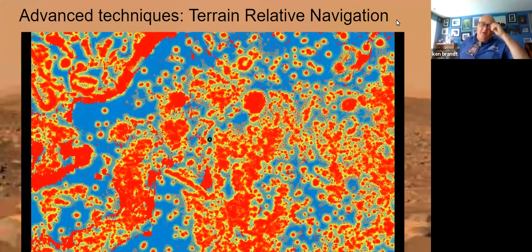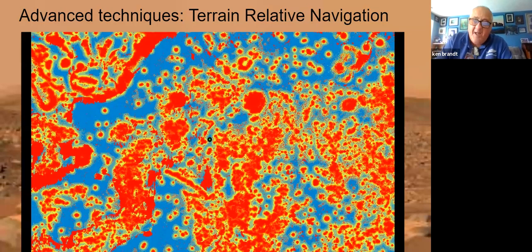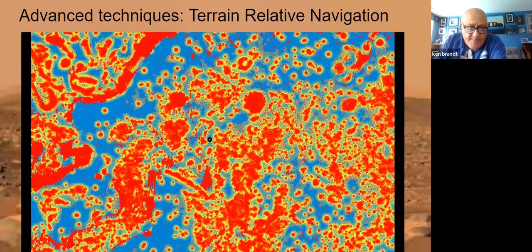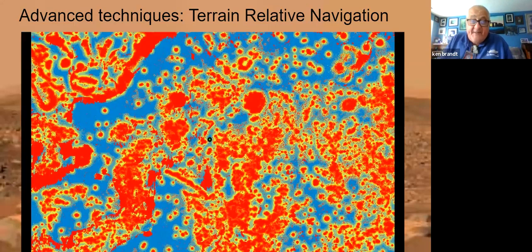The reason Perseverance got to land in such close proximity to the delta it was exploring has to do with terrain relative navigation. You're seeing a radar map of the floor of Jezero Crater. Red is bad — hills, jagged rocks, sand, hazards. Blue is good — flat rock or firm sandy surface you can still drive on. You can see Perseverance snuggled right between those two red splotches. That little green dot is where Perseverance and Ingenuity landed on Mars in February 2021 — basically in an area the size of a doctor's office parking lot. They landed this thing literally on a dime.